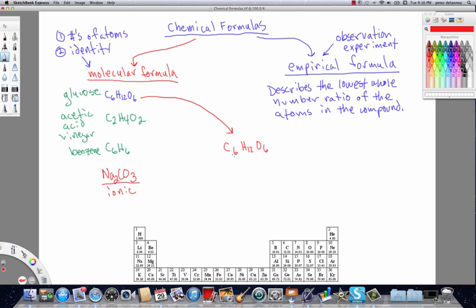Now what you'll notice is that the subscripts in each of the three cases are divisible by other numbers. Like for example, we could divide the six, the twelve, and the six by two. We could divide it by three. We could even divide it by four, but we'd end up with fractions. The main thing to see is that we could choose to divide it by six.